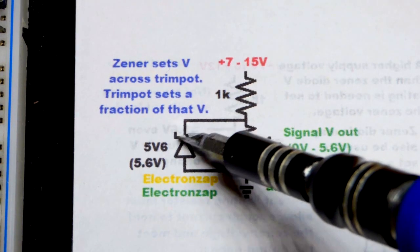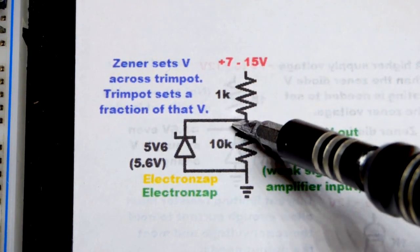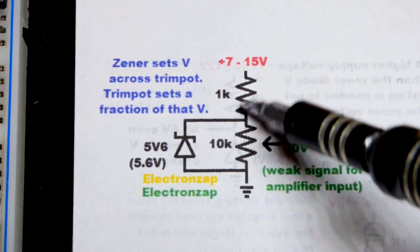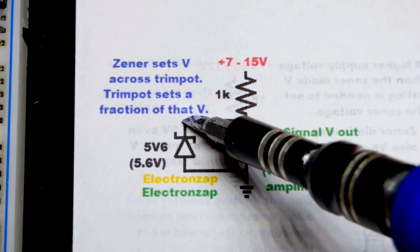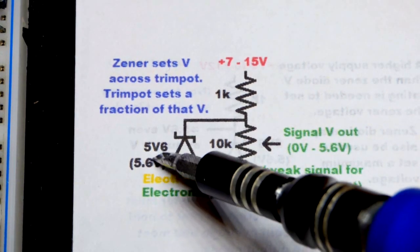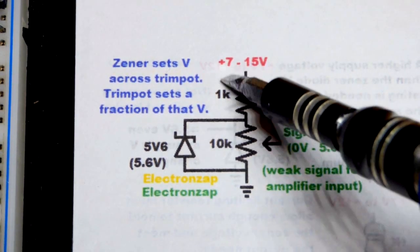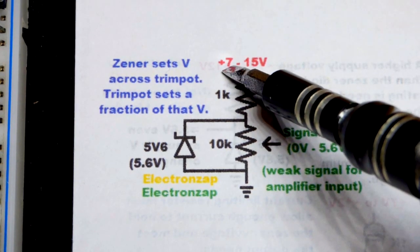But in any case, when you apply a voltage across that with a resistance to limit the current, but you need some current to flow, it will build up that Zener voltage as long as the supply voltage is high enough.